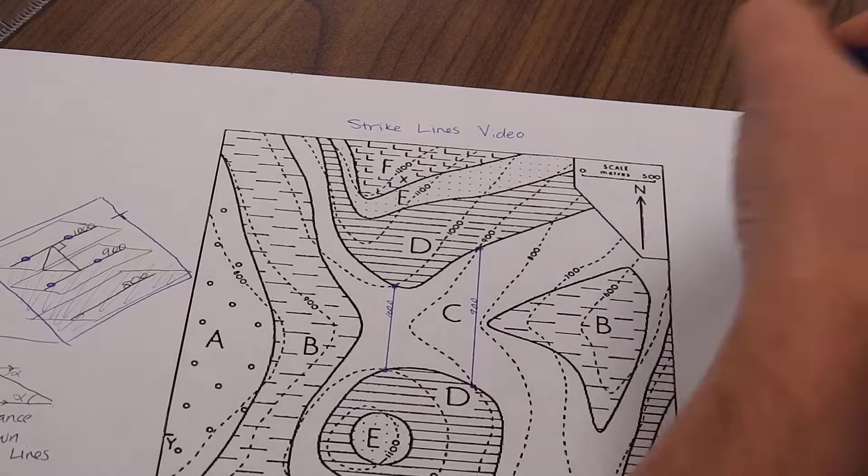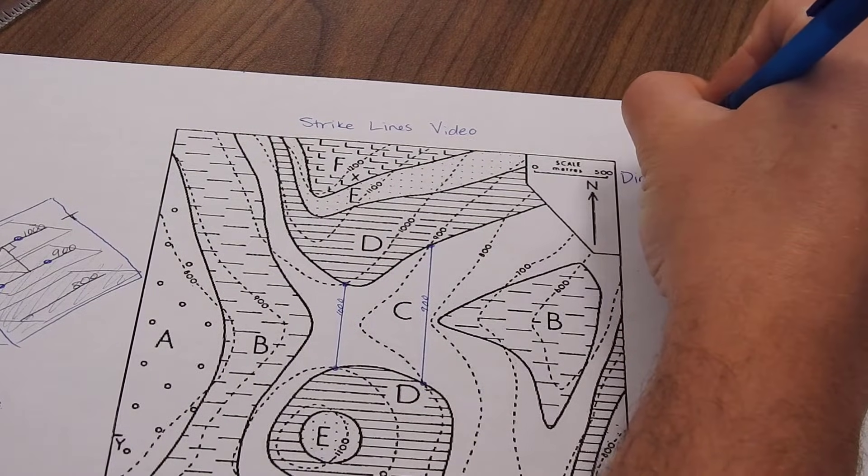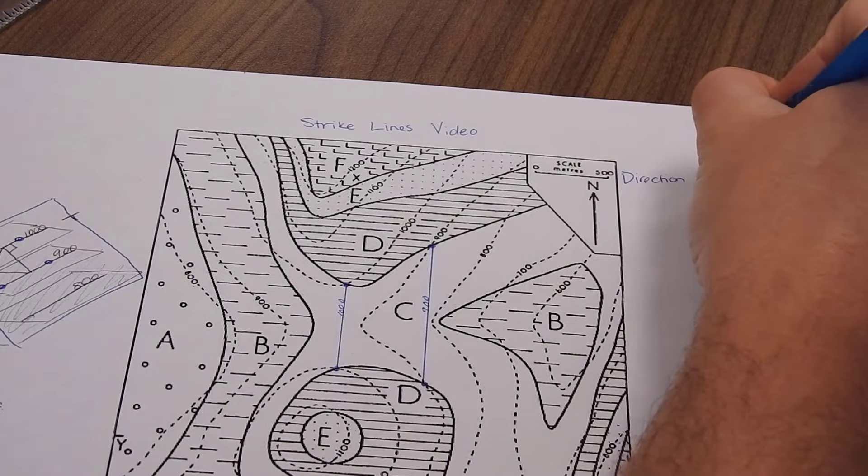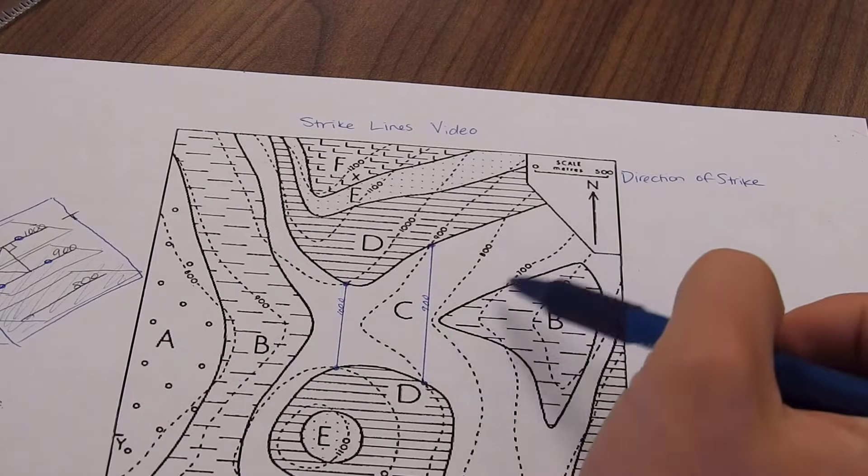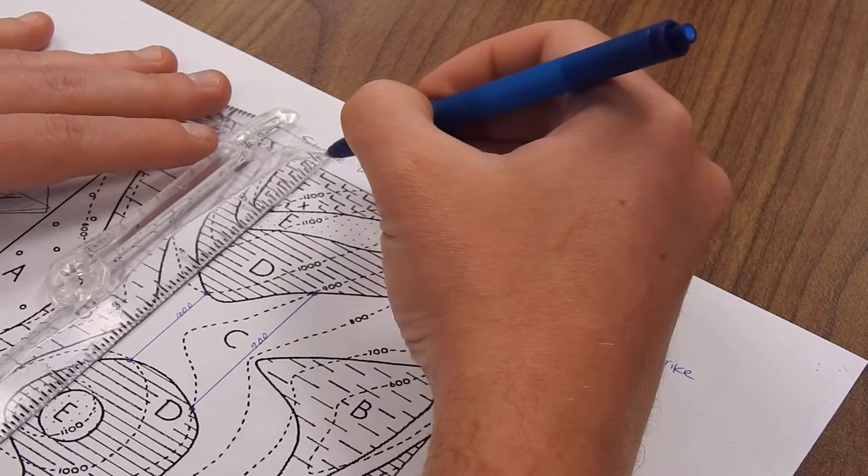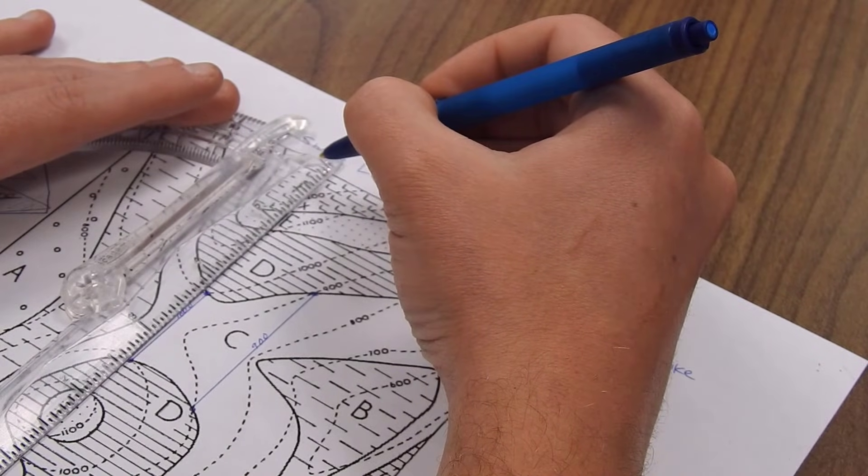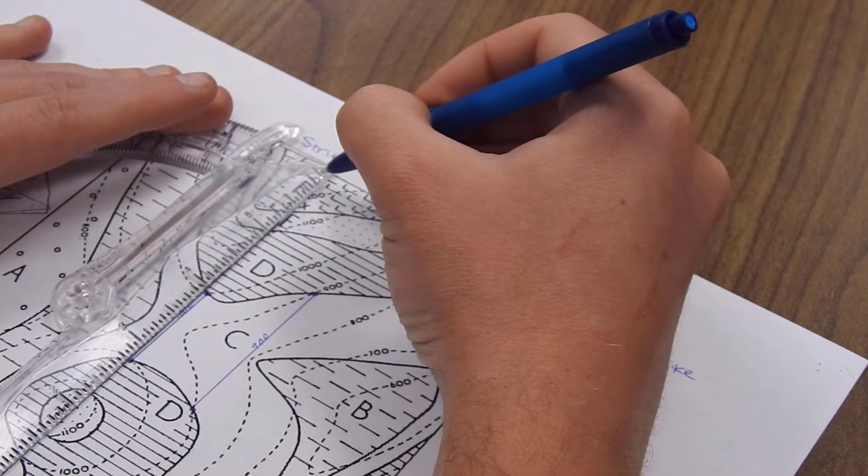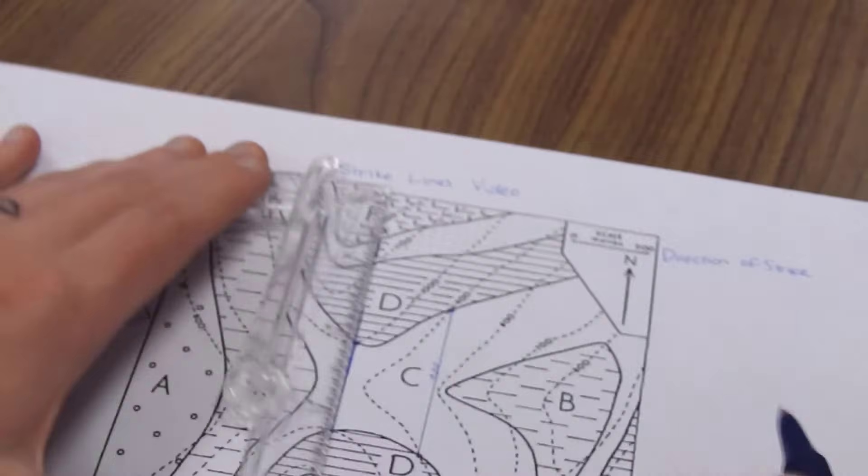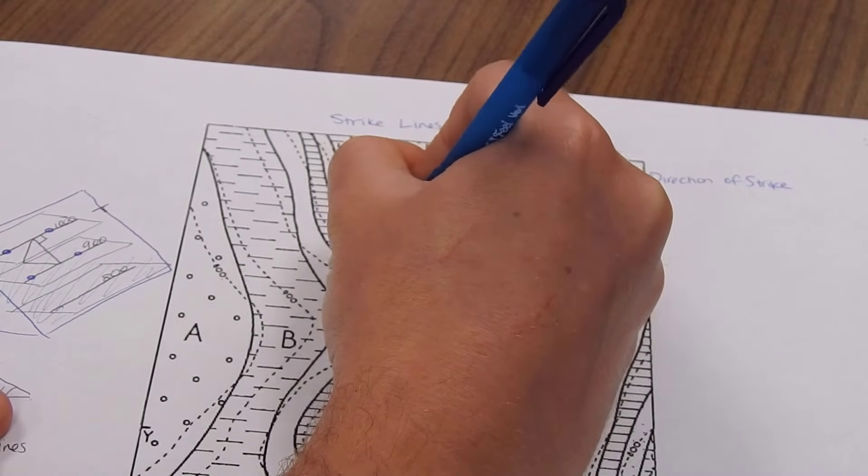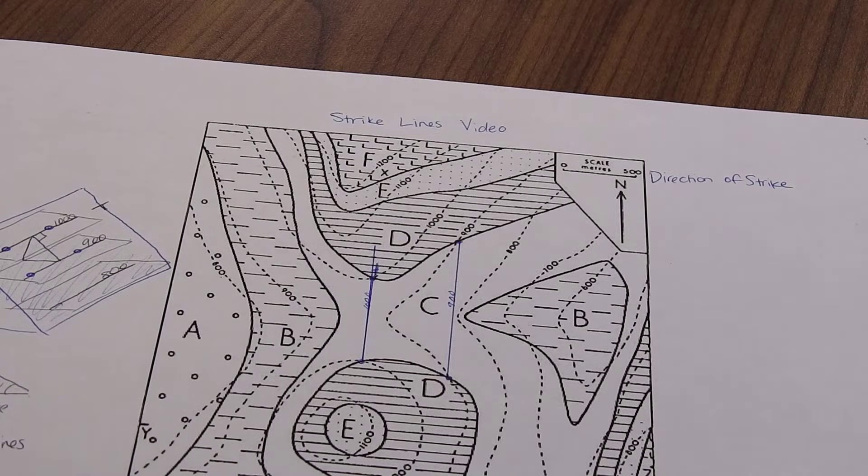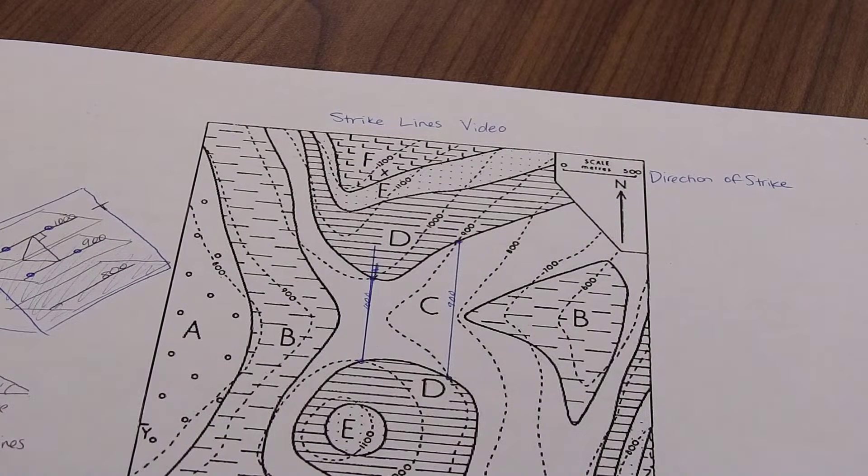So first, if you were asked to determine the direction of strike of that contact, I would first expect you, once you have this line, to draw in a line that's straight vertical, assuming that straight vertical is north or straight up is north. And then measure that angle between your strike line and north. Here, it looks like it might be one degree.